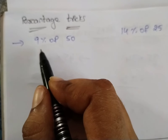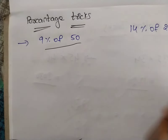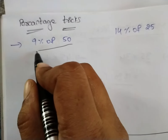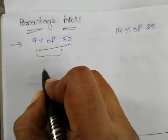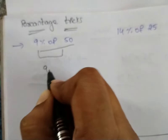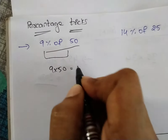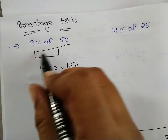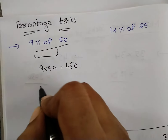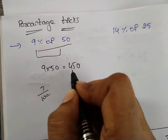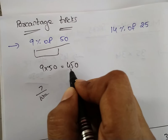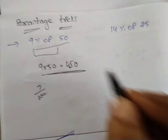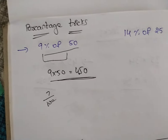I will write 9% of 50. So, 9 into 50 is 450. And the percentage is 9 by 100, so we will write the decimal point 2 digits in. Our answer is 4.50.